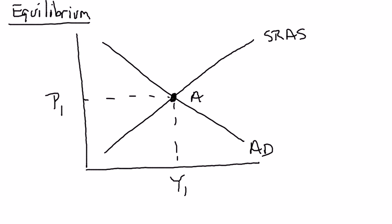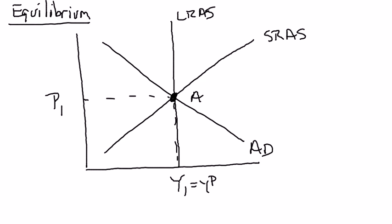Now, what distinguishes the short-run equilibrium from a long-run equilibrium? A short-run equilibrium exists wherever a short-run aggregate-supply curve intersects the aggregate-demand curve — that determines the price level and the level of output. However, if you remember the long-run aggregate-supply curve, in the long run real GDP equals potential. So if this level of output equals potential, we'll have a vertical long-run aggregate-supply curve at that output level, and all three curves will intersect at point A. That's a long-run equilibrium.